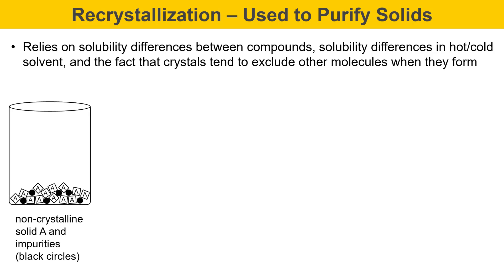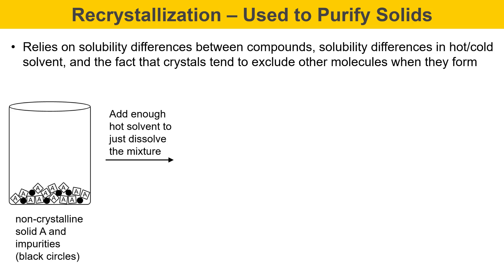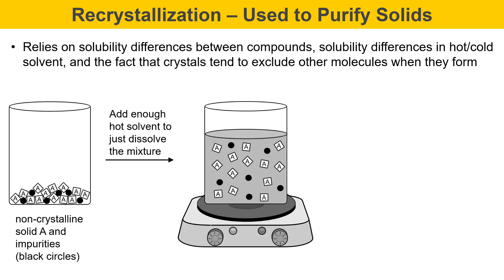This is a non-crystalline solid, I'll label it A, and there are impurities here that are shown with black circles. In recrystallization, you want to add enough hot solvent to just dissolve the mixture, and that gives a situation that looks like this, where I'm representing all of the molecules being dissolved in a solvent.